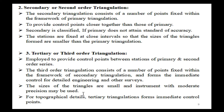Tertiary or third order triangulation is employed to provide control points between stations of primary and second order series. It consists of a number of points fixed within the framework of secondary triangulation and forms the immediate control for detail engineering and other surveys. The sizes of the triangles are small, and instruments with moderate precision may be used. Tertiary triangulation forms immediate control points for topographical details.